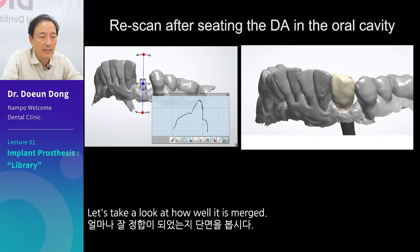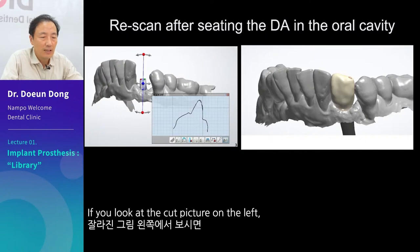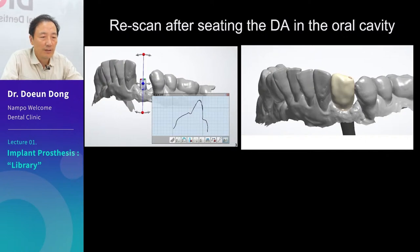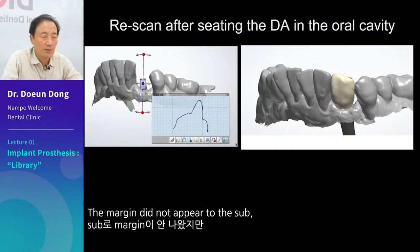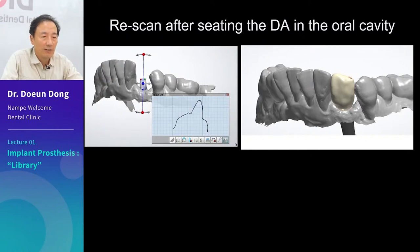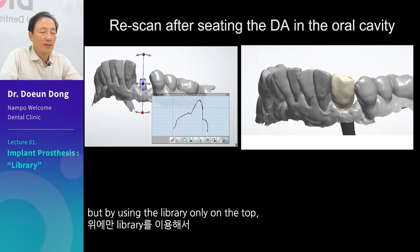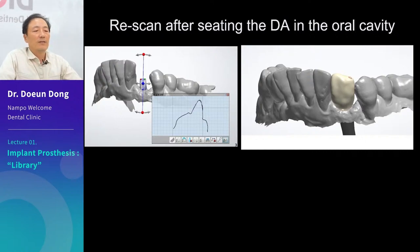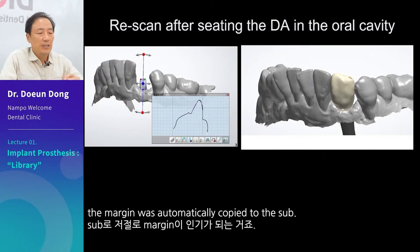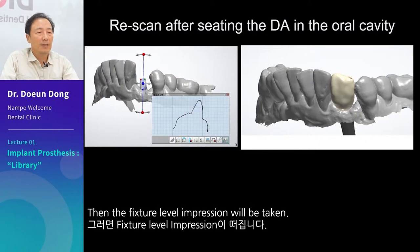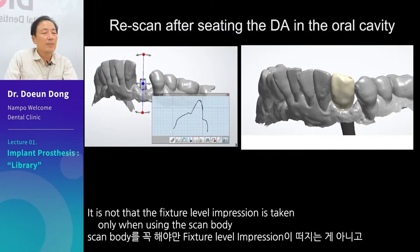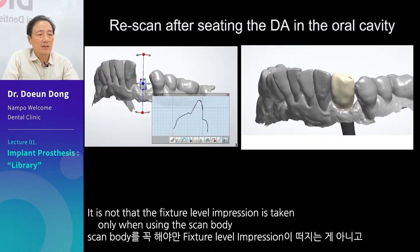Let's take a look at how well it is merged. If you look at the cut picture on the left, it is fitted very well. The margin did not appear to the sub, but by using the library only on the top, the margin was automatically copied to the sub. Then the fixture level impression will be taken. It is not only taken when using the scan body, but also when a digital abutment is worn.